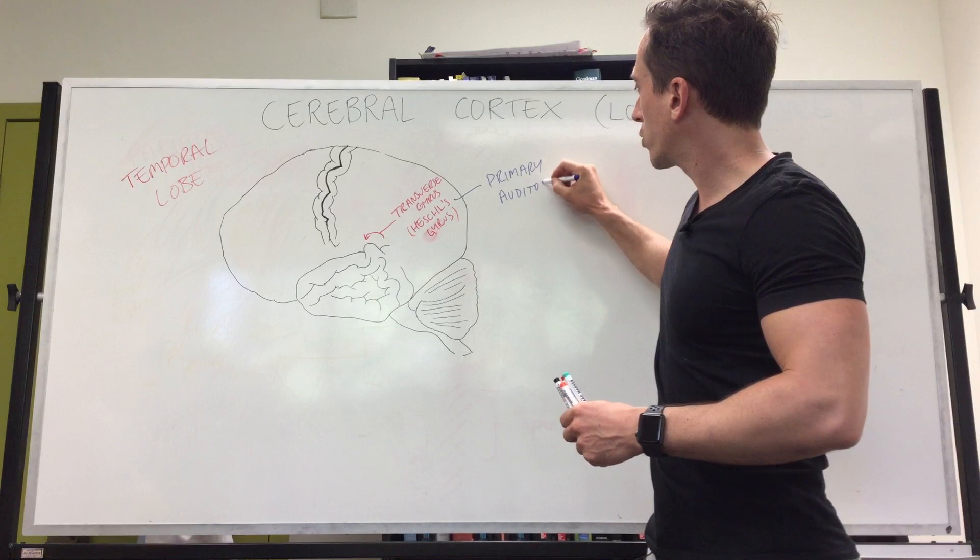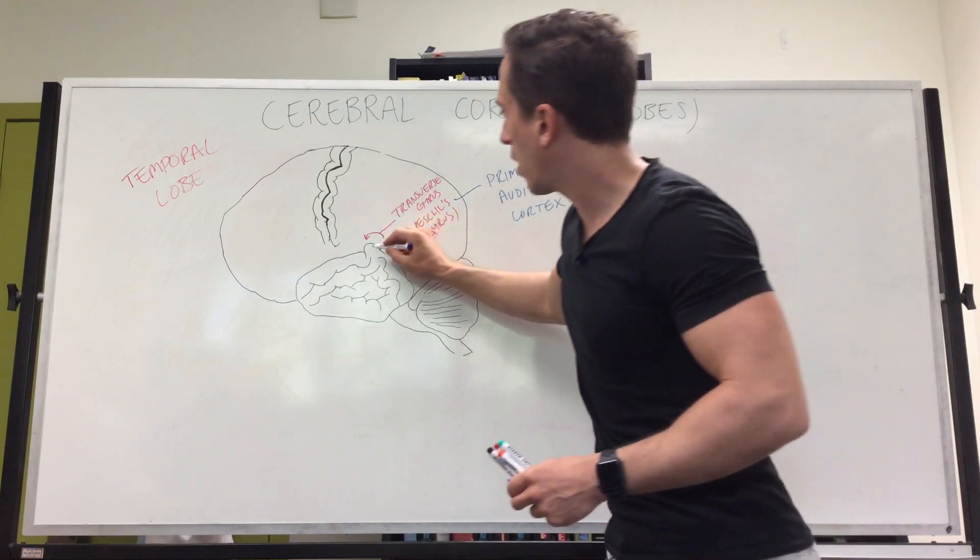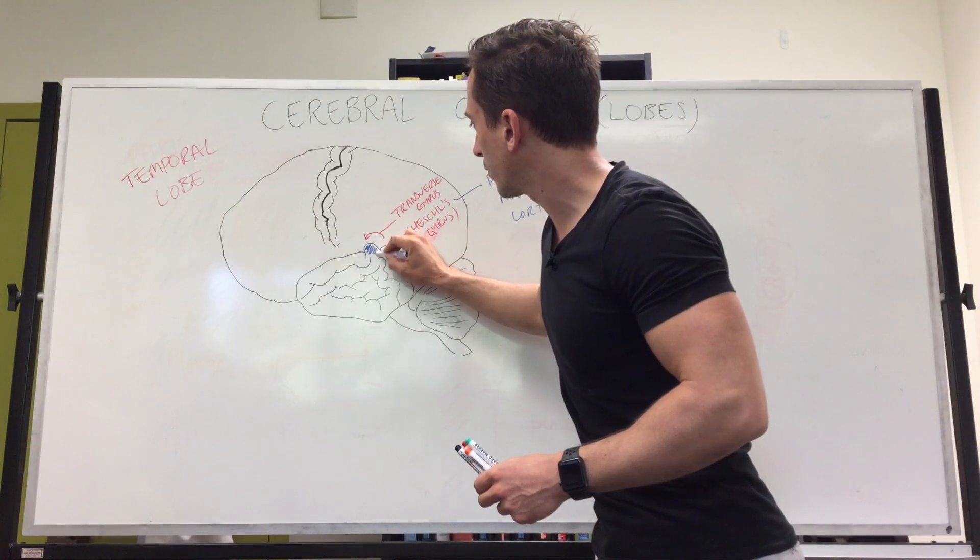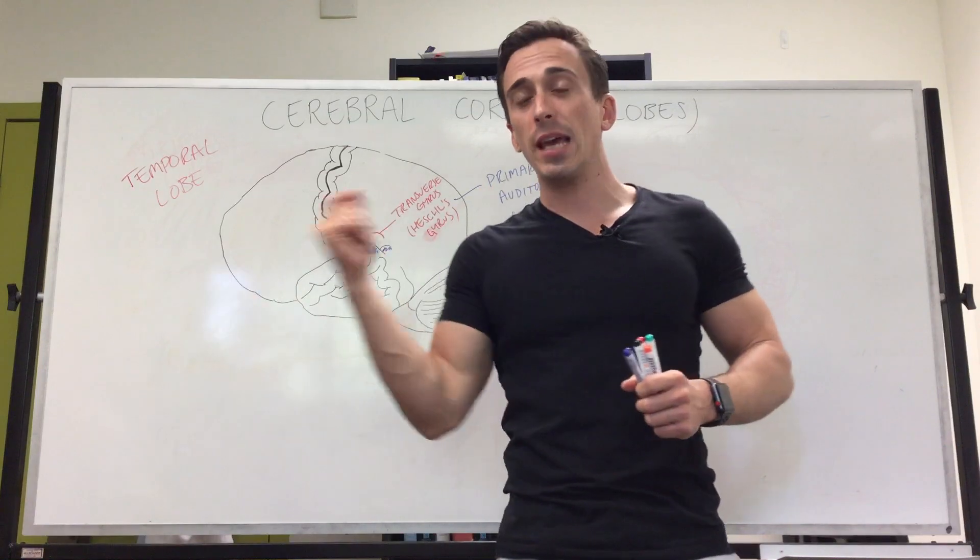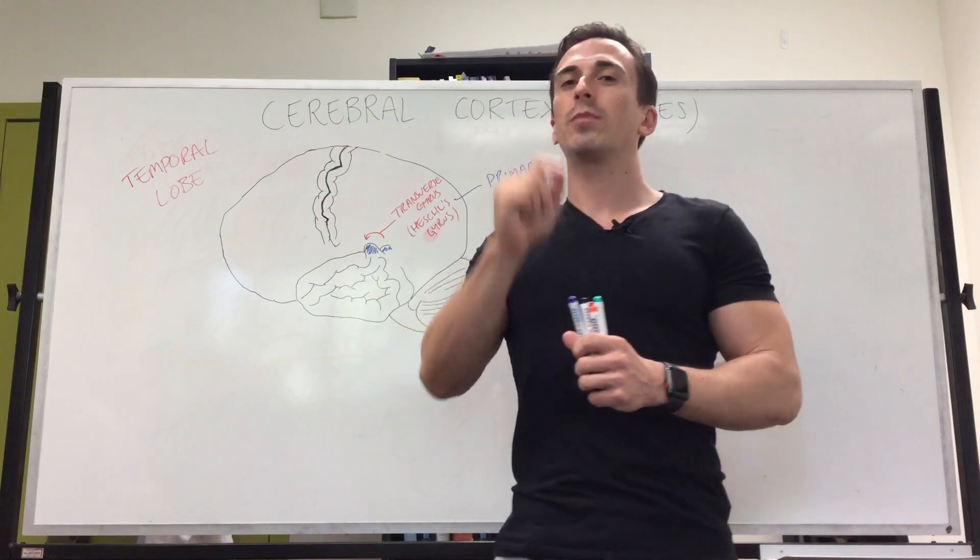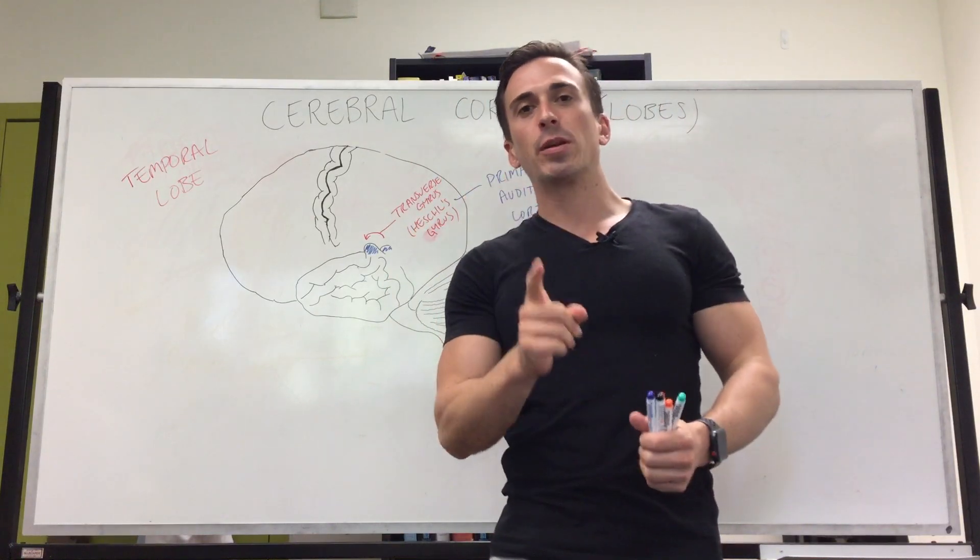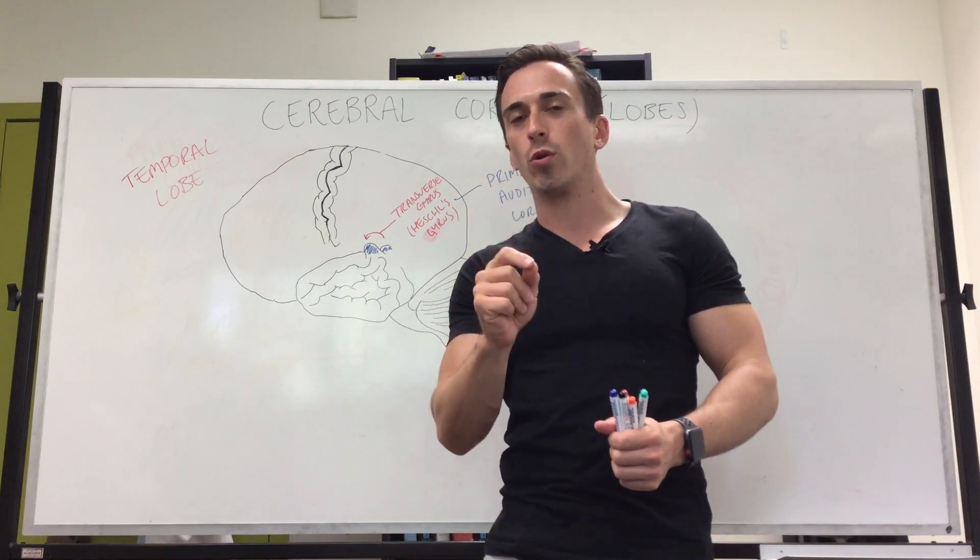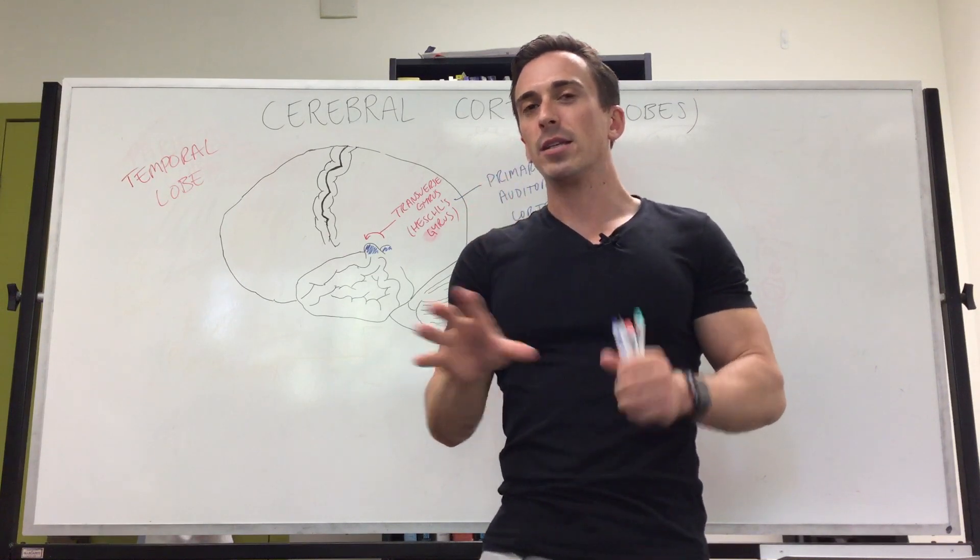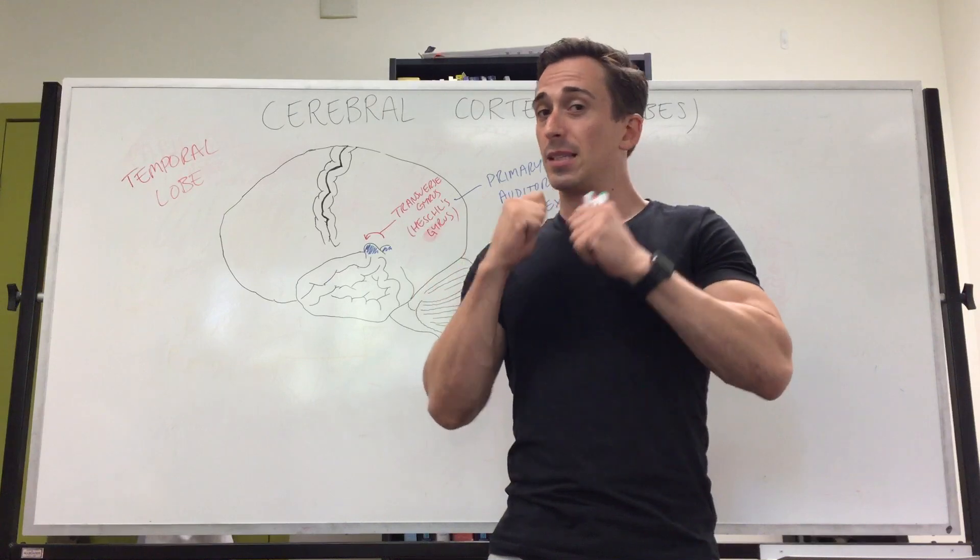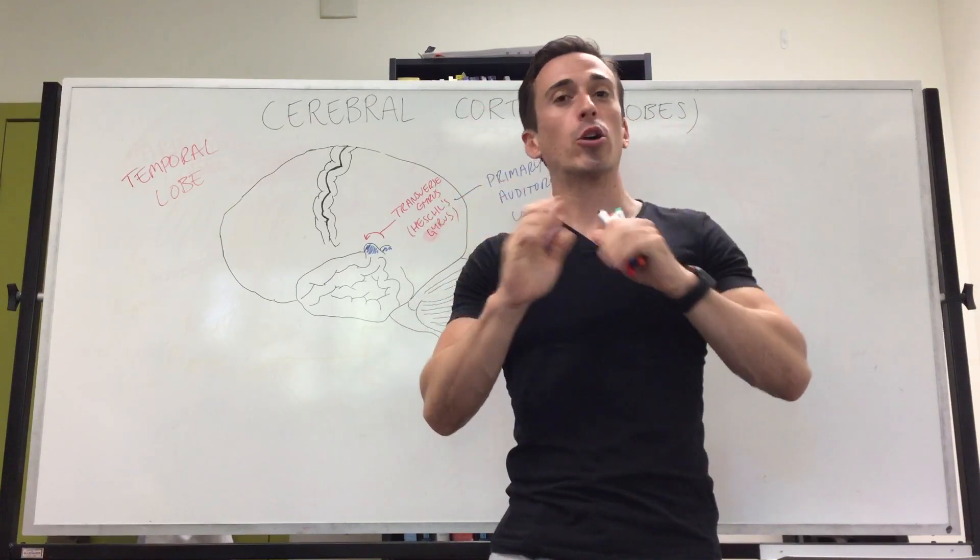The primary auditory cortex means that when sound comes in and goes to our brain, we become consciously aware of the sound because of this primary auditory cortex at Heschel's gyrus. When we hear a sound, it simply means we're hearing a noise—it's not our comprehension of that sound.